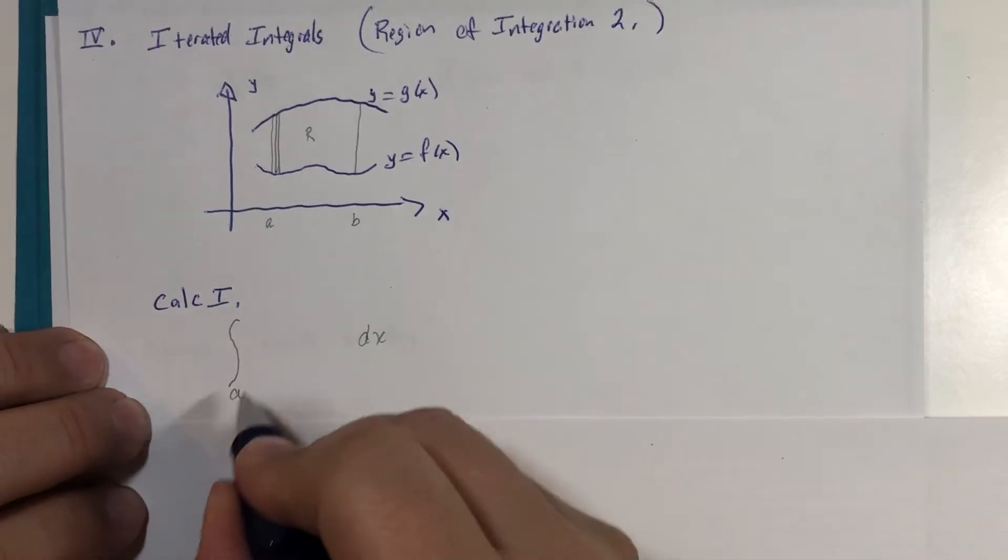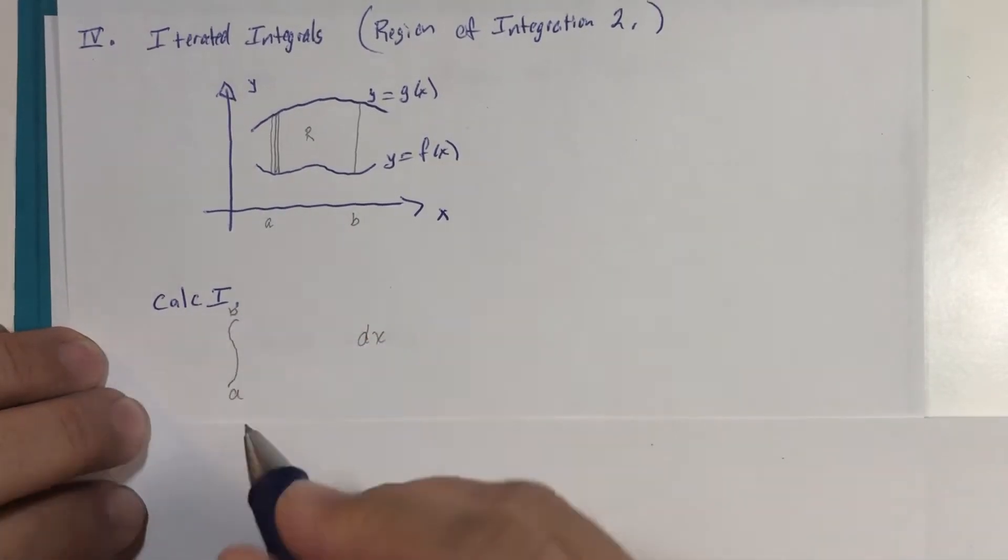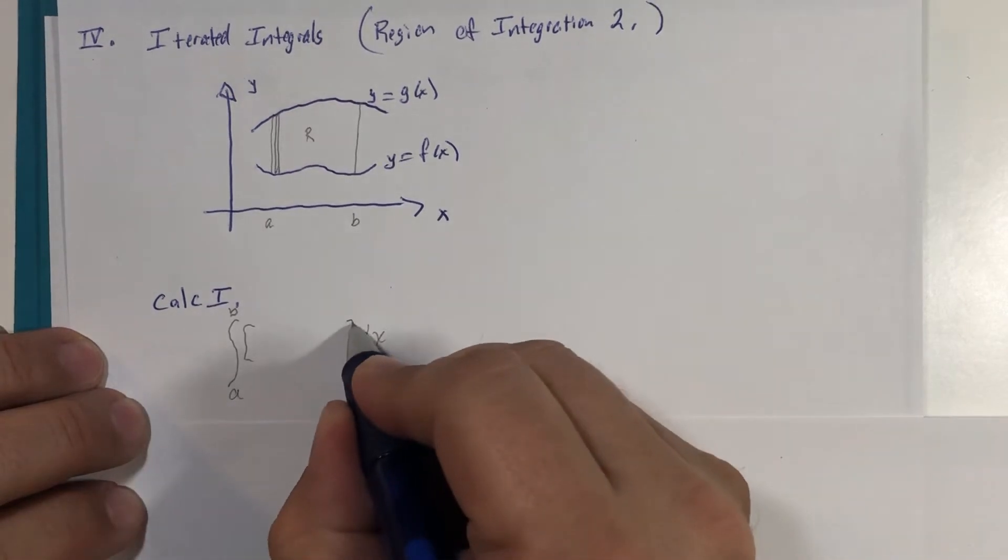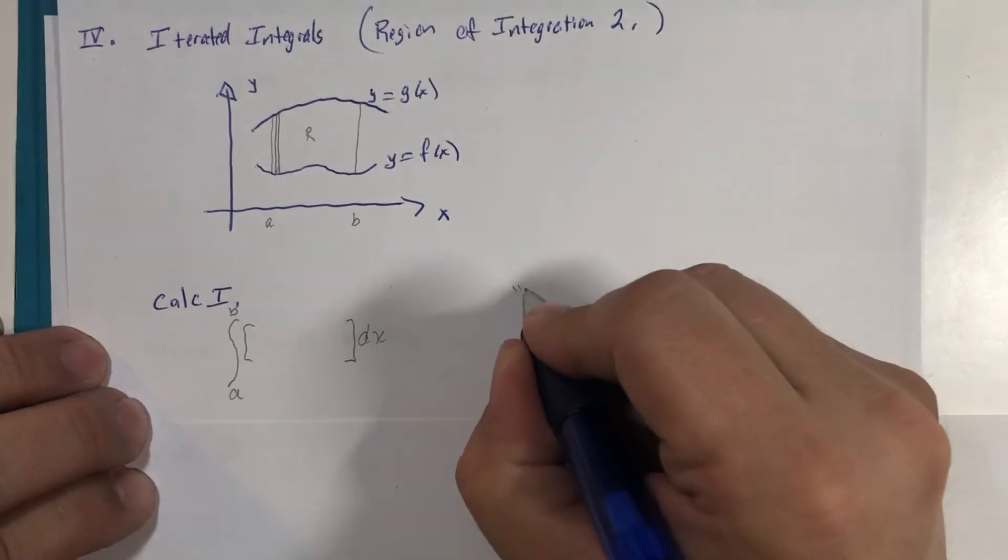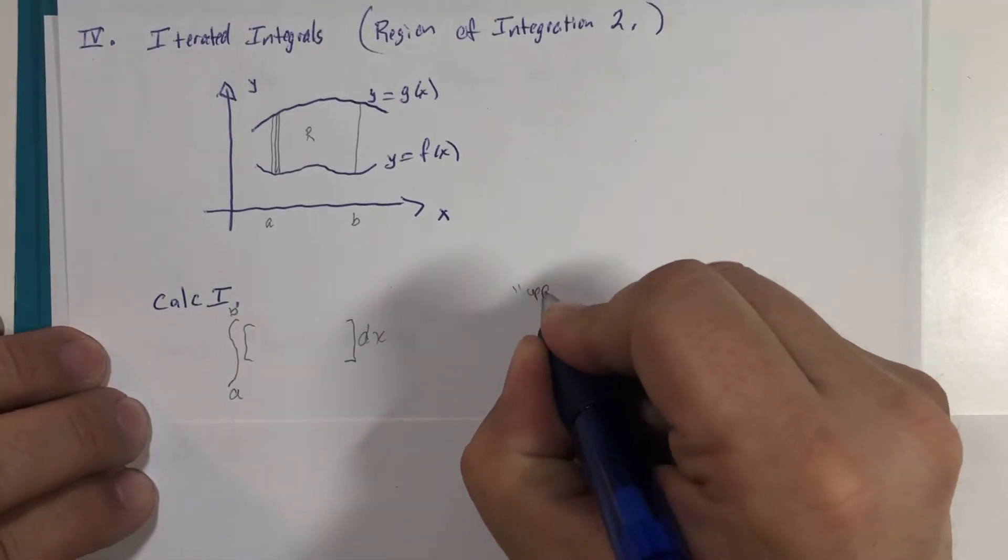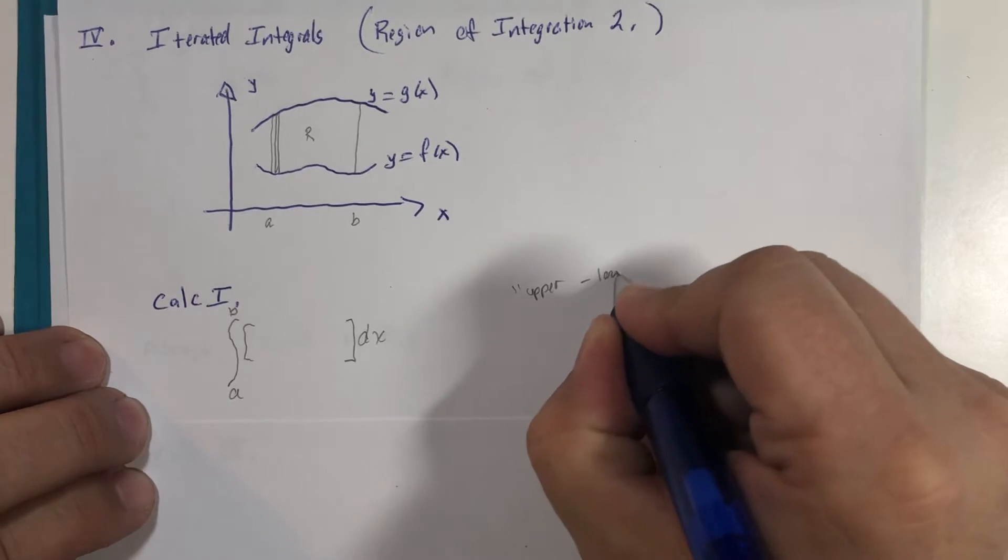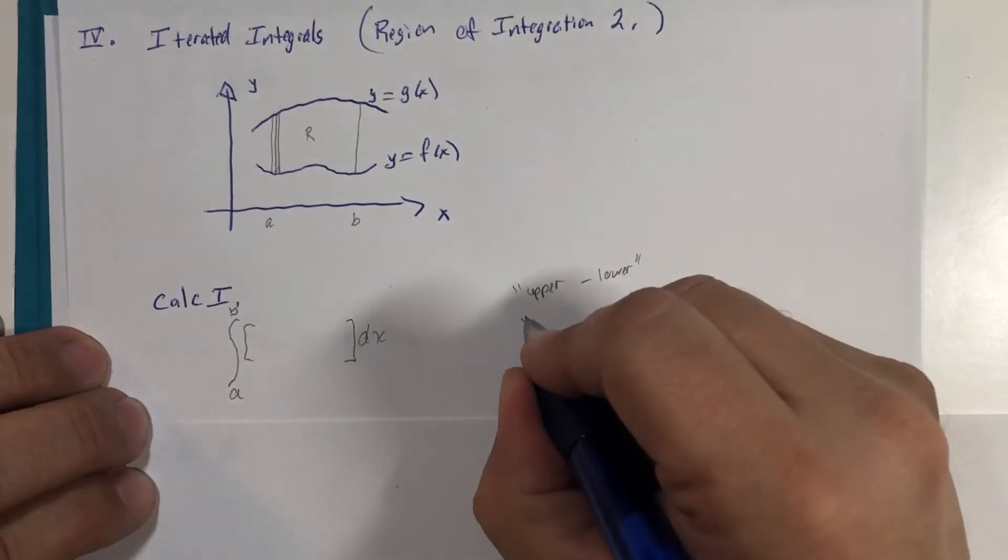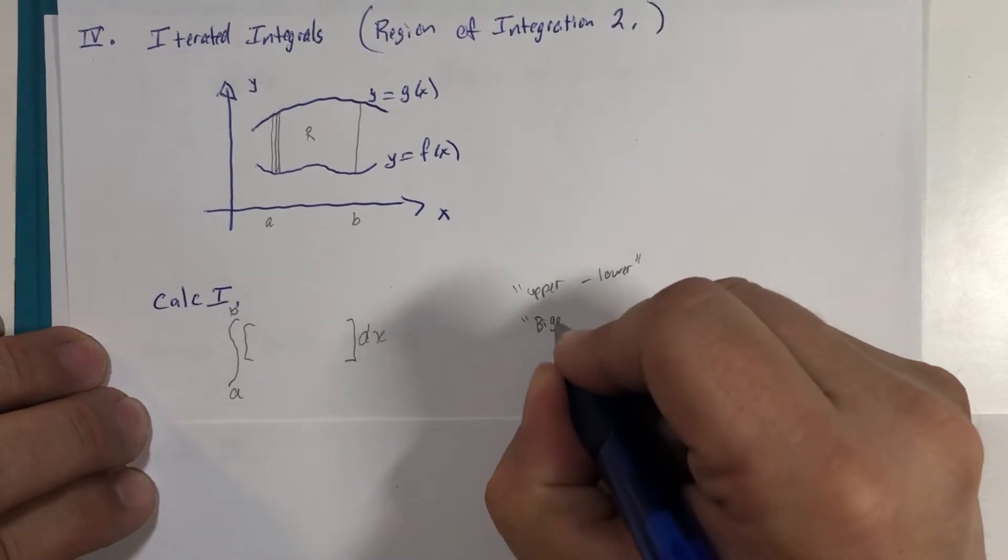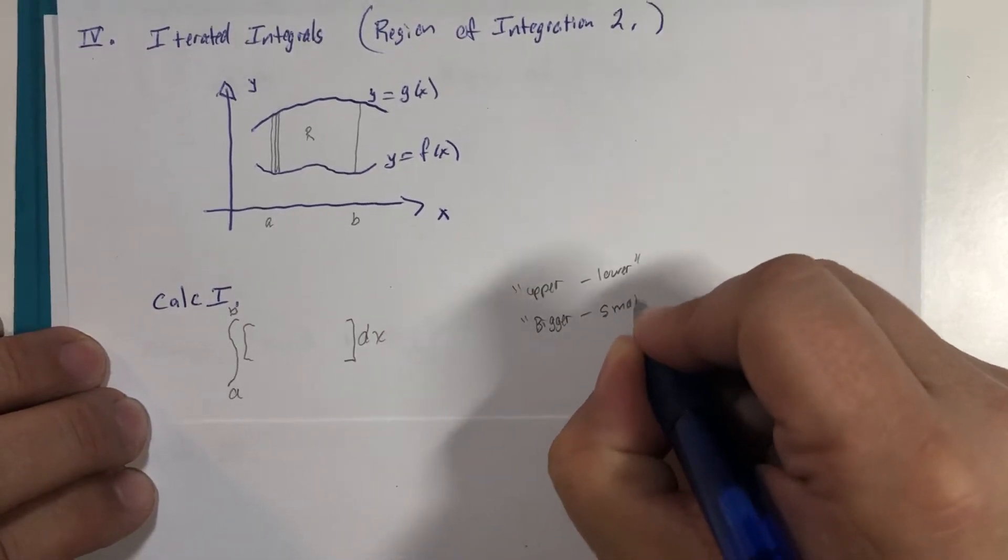The limits or boundaries would be in terms of x, x goes from a to b, and then I have a little memory device I always tell my students. I always use the term upper minus lower, but what is a better way of looking at it is bigger minus smaller.